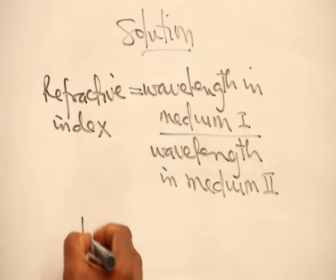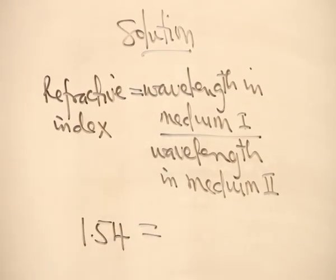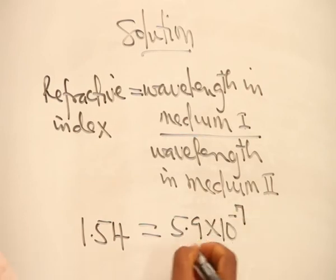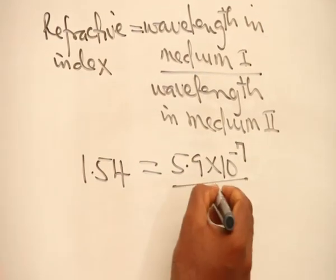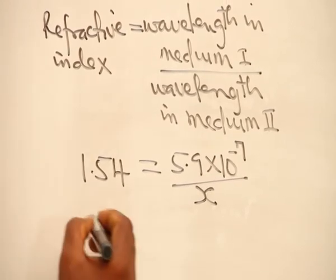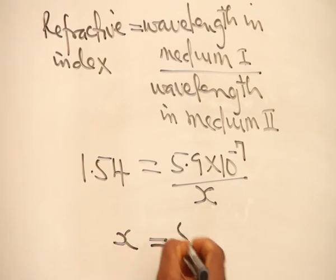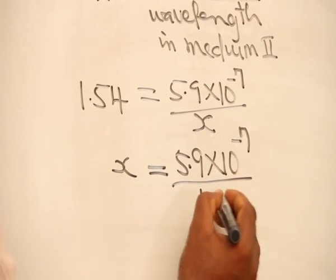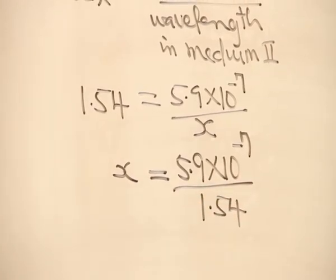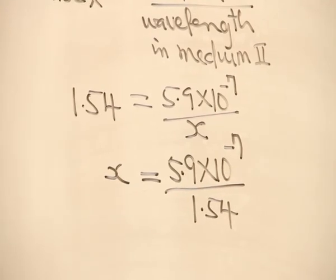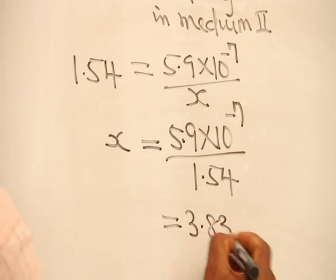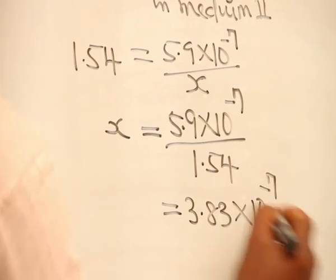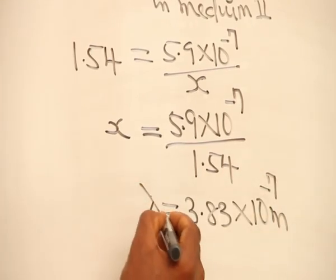1.54 is equal to 5.9 times 10 raised to power minus 7 divided by the unknown wavelength in the second medium. If we cross multiply, we have 5.9 times 10 raised to power minus 7 divided by 1.54. That gives us the wavelength of light in the medium, which is equal to 3.83 times 10 raised to power minus 7 meters.